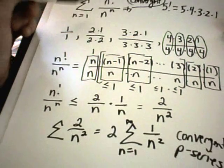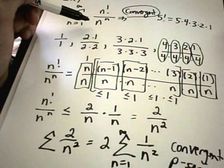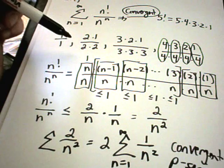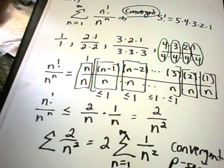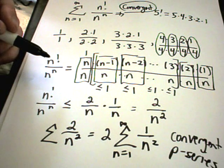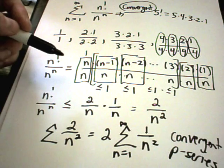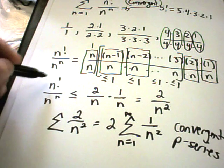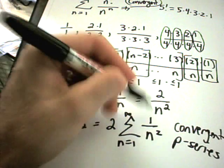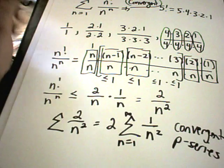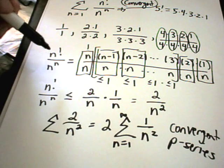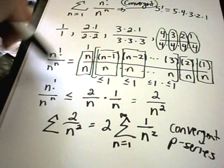This one is certainly not as straightforward — you've got factorials and powers of n. If you don't have a feel for it, write out a few terms and see what's happening. You really have to think and convince yourself that the inequality is in fact correct. But once you have that, you have a convergent p-series. This last one is a little tricky, so take a look at it and write out a few more terms if it's baffling you.